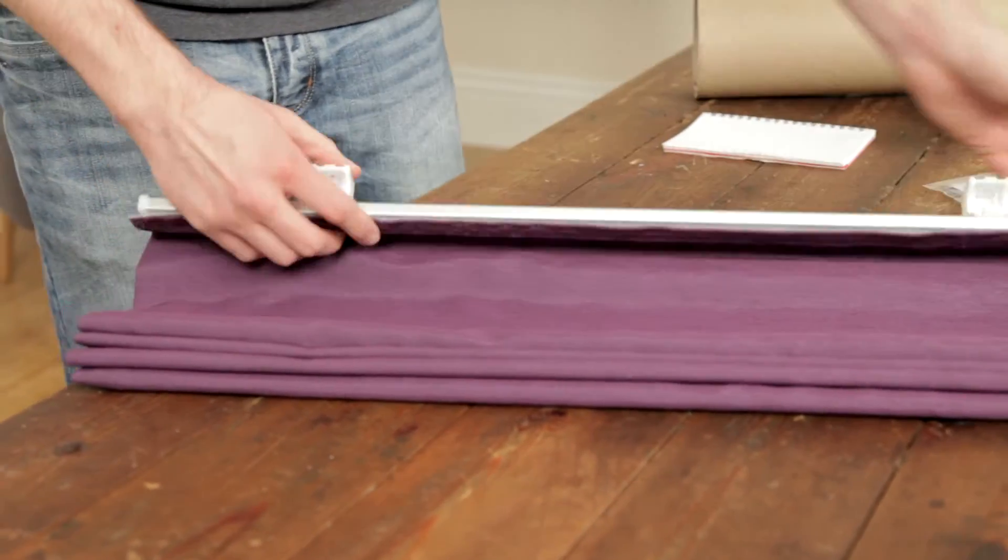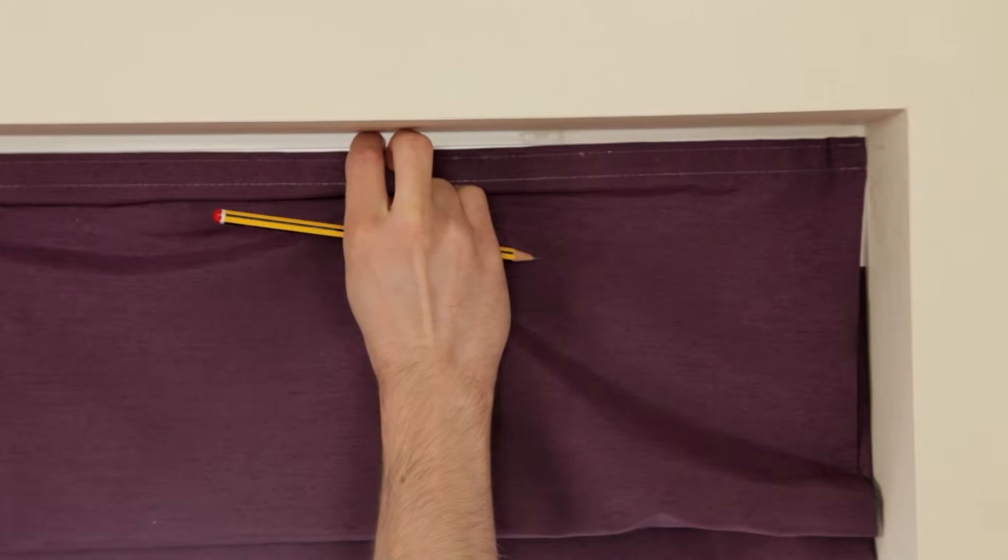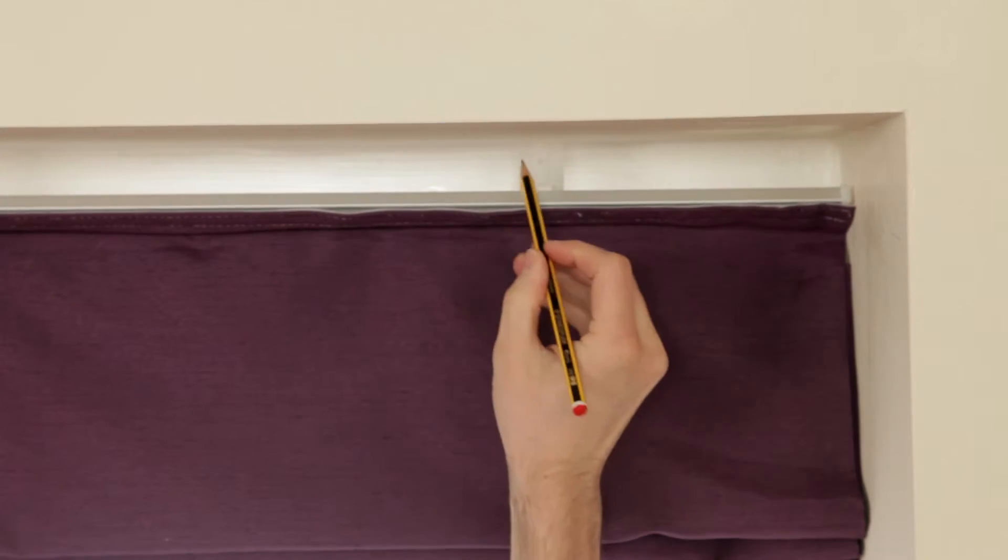First, space out the brackets evenly. Then, place the blind where you're going to fit it. Mark with a pencil where each bracket is going to be.